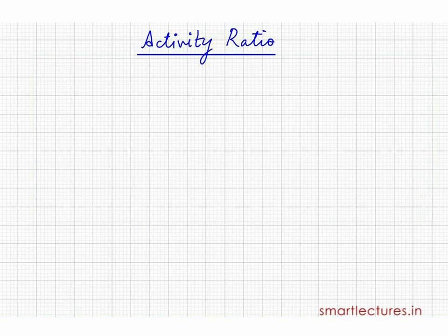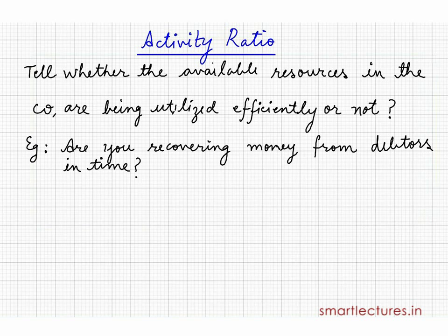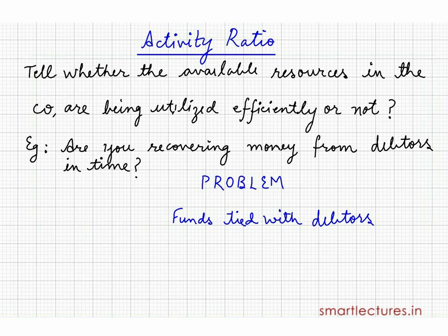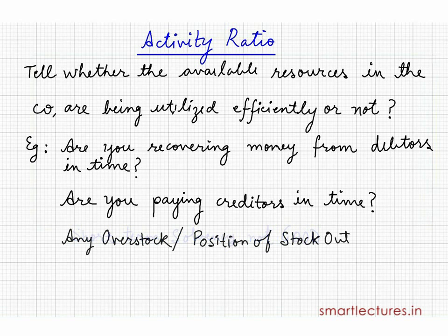Now we'll start activity ratios. Activity ratios tell whether the available resources in the company are being utilized efficiently or not. For example, are you recovering your money from your debtors in time? If not, it can be a big problem — so many funds are tied with the debtors and the company can be in a tight corner. Are you paying your creditors in time? If not, it means your short-term solvency is not good. Is there any overstock or a position of stock-out in your company?